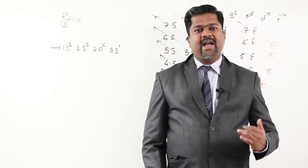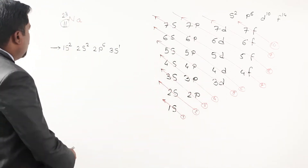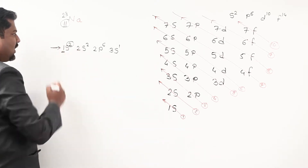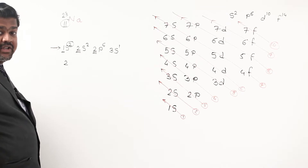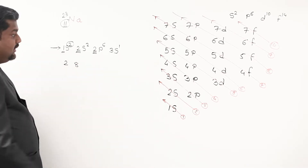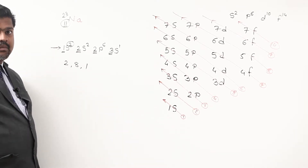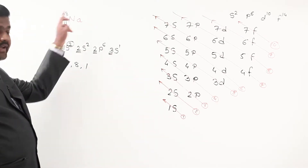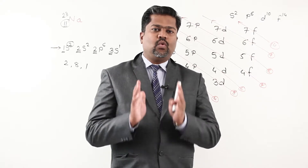So the electronic configuration of sodium according to this scheme is: 1s2, 2s2, 2p6, 3s1. Checking against the previous scheme: first shell has 2 electrons, second shell has 2+6=8 electrons, third shell has 1 electron — giving 2,8,1 — which is the same result. We have simply switched the way we express it: 1s2 2s2 2p6 3s1.